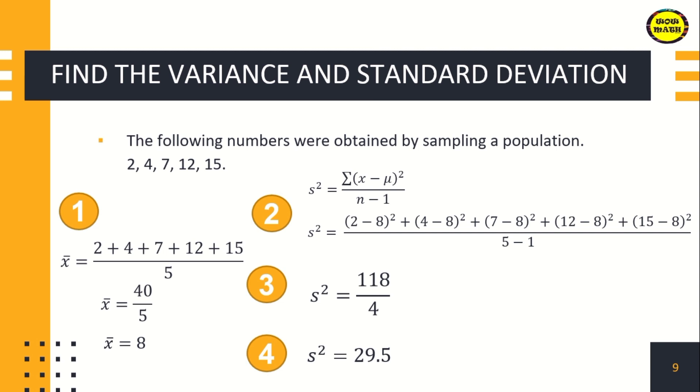Now to get the value of our standard deviation, since this is sample data, we use this formula or simply get the square root of your variance. Square root of 29.5 equals 5.43. So that's how you get variance and standard deviation. First, get the mean value. Then check if the given problem is population or sample to decide what formula to use. After getting the variance, just get the square root to find the standard deviation.